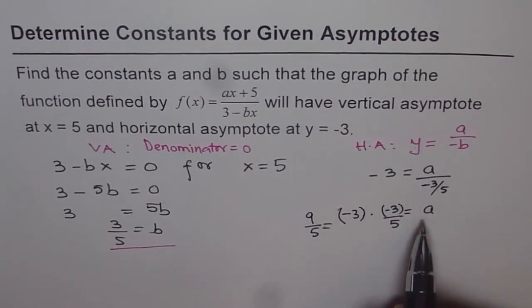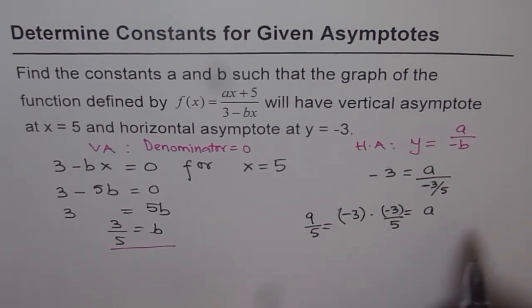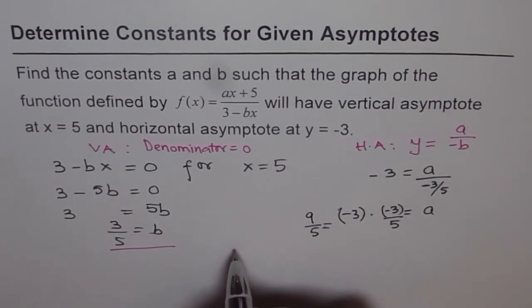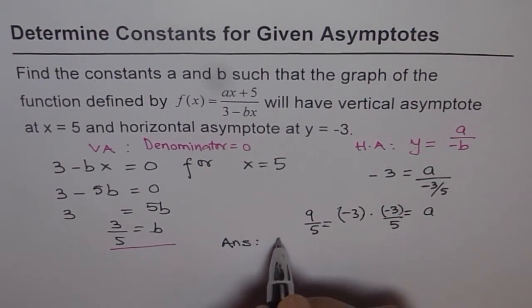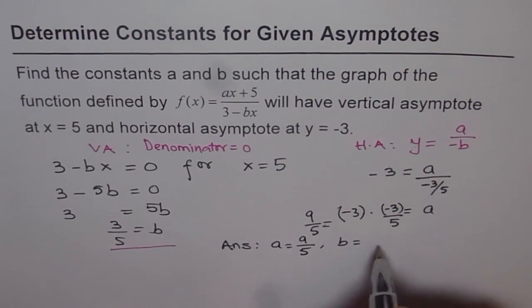So we get our function with a equals 9 over 5 and b as 3 over 5, correct? So these are the values and now we can write down our answer and the answer is a equals 9 over 5 and b equals 3 over 5, correct?